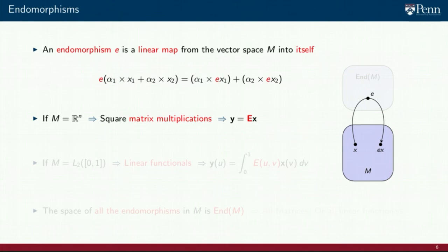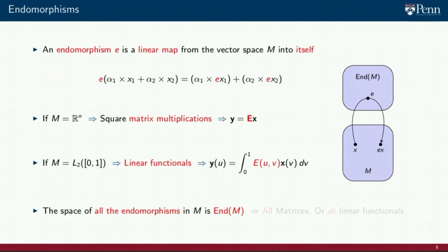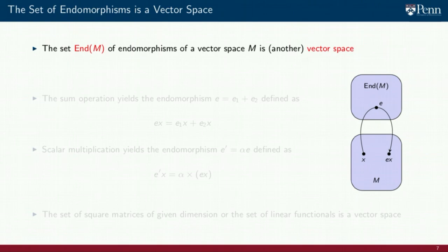If we consider the vector space M = Rn, the transformation E is a matrix multiplication. If the vector space is the set of functions of finite energy supported on [0,1], the endomorphism E is the linear functional we encountered when studying graphon signals. The object of interest is the collection of all endomorphisms, which is the space End(M). If this sounds complicated, it is because we are being abstract and general — we are simply referring to things like the space of all matrices or the space of all linear functions.